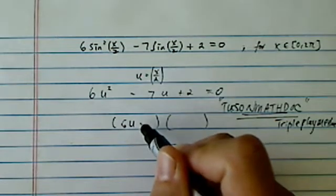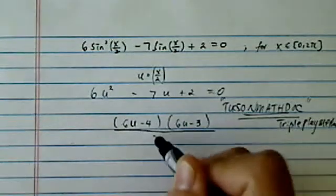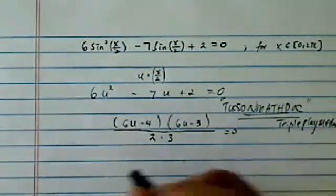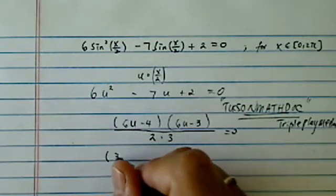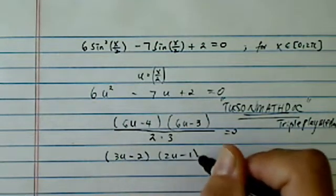In our case here, we have 6u minus 4, 6u minus 3, the whole thing divided by 6, which is 2 times 3, equal to 0. So the factor here, which I'm not covering, is 3u minus 2, 2u minus 1, equal to 0.